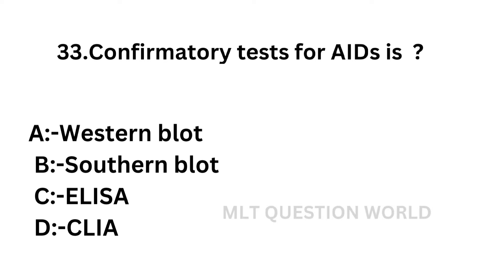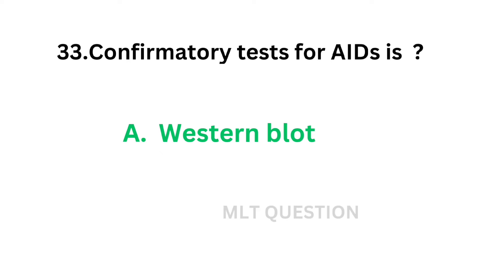Question number 33: Confirmatory test for AIDS is — option A: Western blot, option B: Southern blot, option C: ELISA (enzyme linked immunosorbent assay), option D: CLIA (chemiluminescent immunoassay). The correct answer is option A, western blot. Confirmatory test for AIDS is the western blot test.